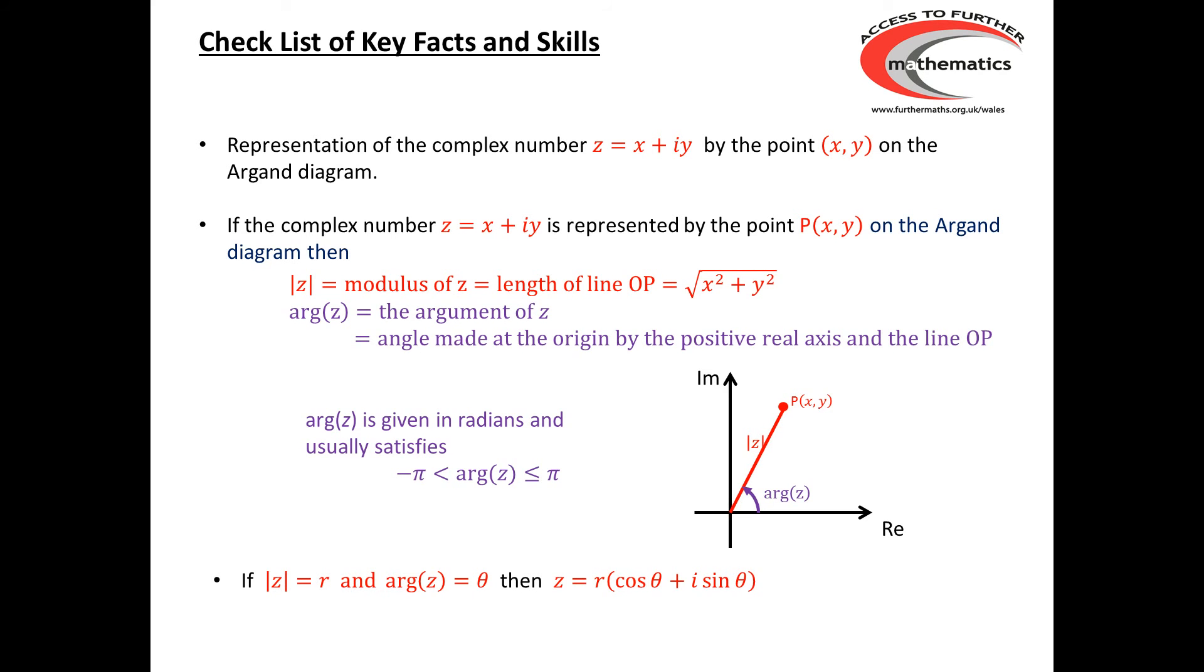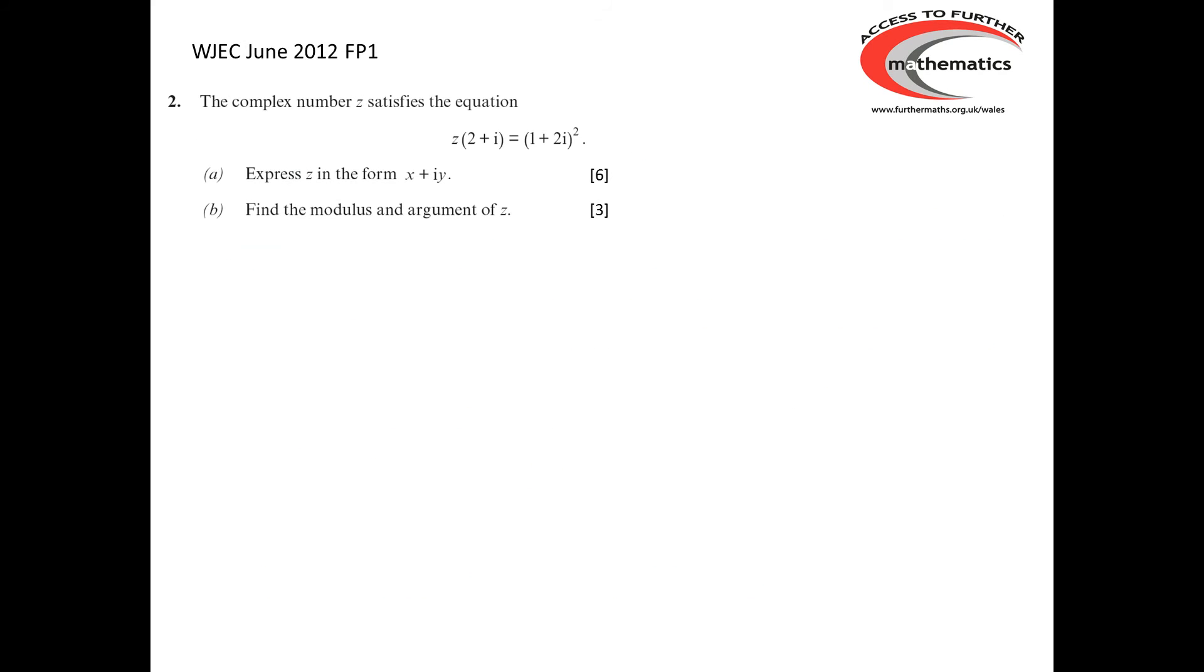So, now let's have a look at a couple of complex number examples. The first one comes from the 2012 June paper. So, we're looking at the equation z(2 + i) = (1 + 2i)², and we're looking to solve that equation. Well, probably the first thing to do here is to concentrate on the right-hand side of the equation. We've got (1 + 2i)².